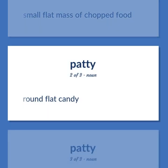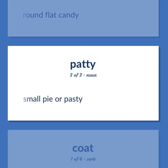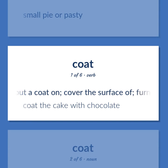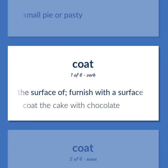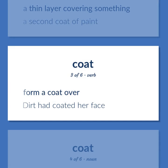Round flat candy. Small pie or pasty. Put a coat on, cover the surface of, furnish with a surface. Coat the cake with chocolate. A thin layer covering something. A second coat of paint. Form a coat over — dirt had coated her face.